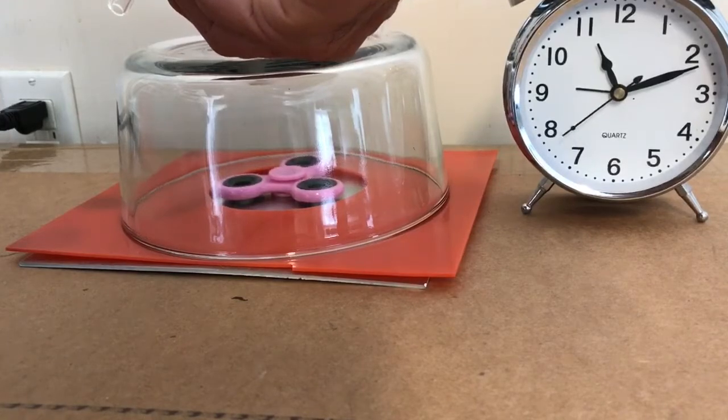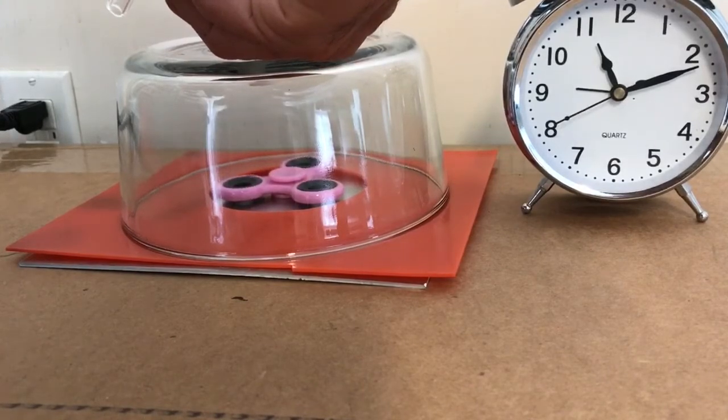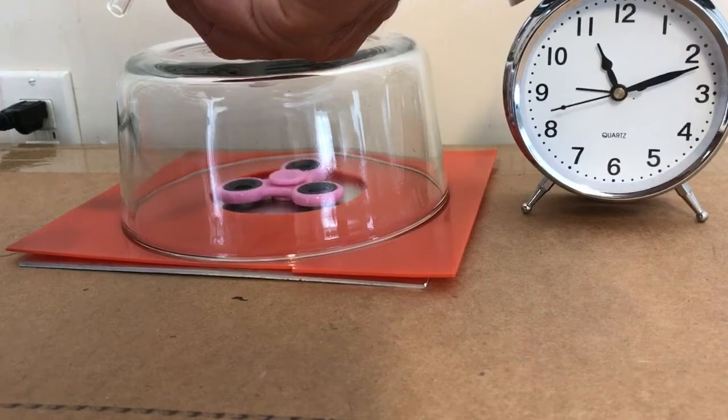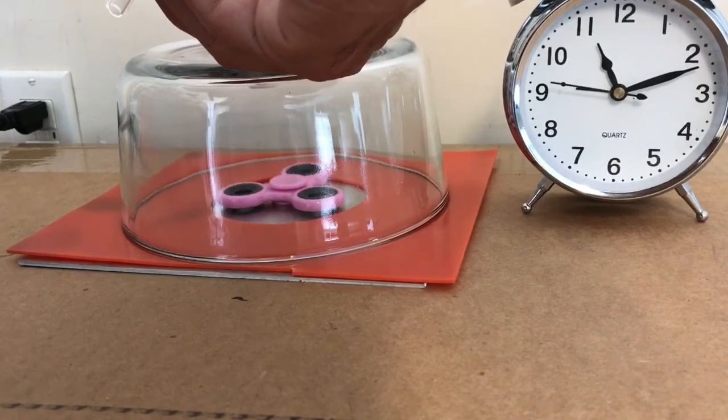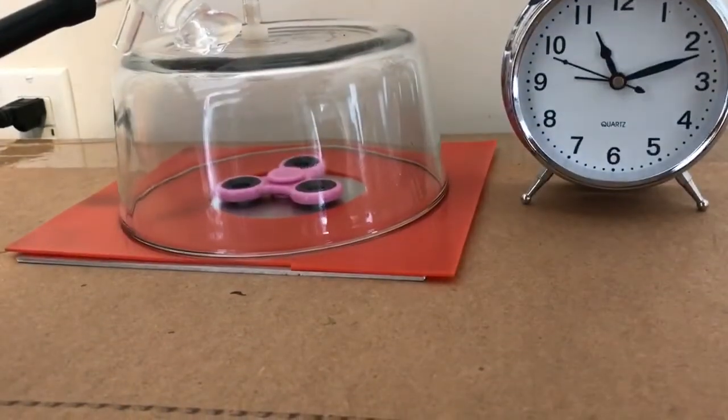So there you go, folks. The vacuum doesn't seem to make a whole lot of difference as to how long it spins. Can't really figure out why, but it may be that there is more friction from the bearings than from air resistance. Thanks for watching and please check back.